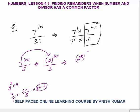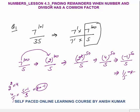So 2 power 100 becomes 2 squared power 50, which is 4 power 50 by 5. Replacing 4 with its remainder of minus 1, we get minus 1 power 50 by 5. Minus 1 to an even power is 1, so the remainder is 1. So 7 power 100 divided by 5 gives remainder 1. The final remainder is common factor into remainder: common factor was 7, remainder is 1, so the final remainder is 7. So 7 power 101 divided by 35 gives final remainder 7.